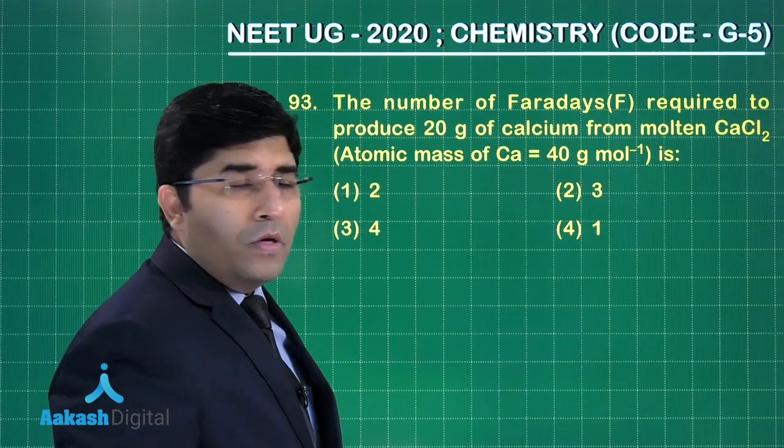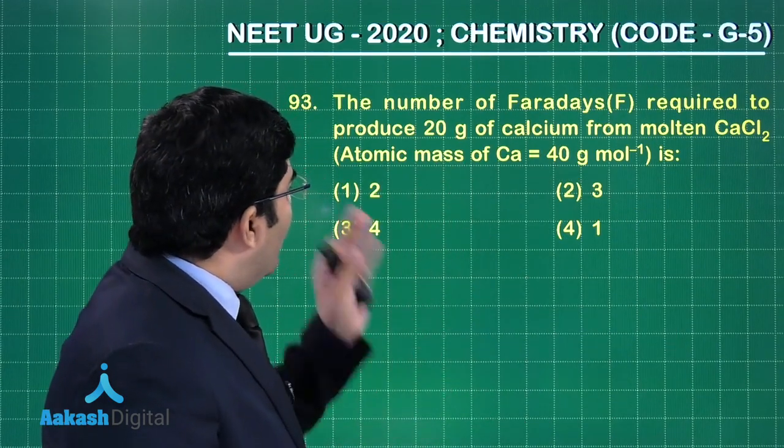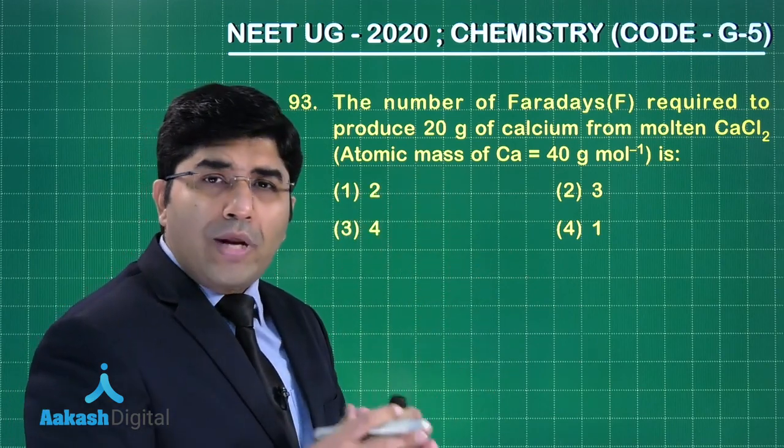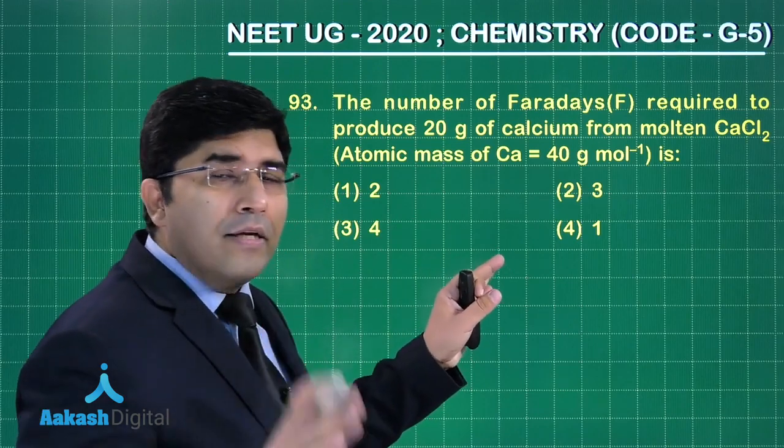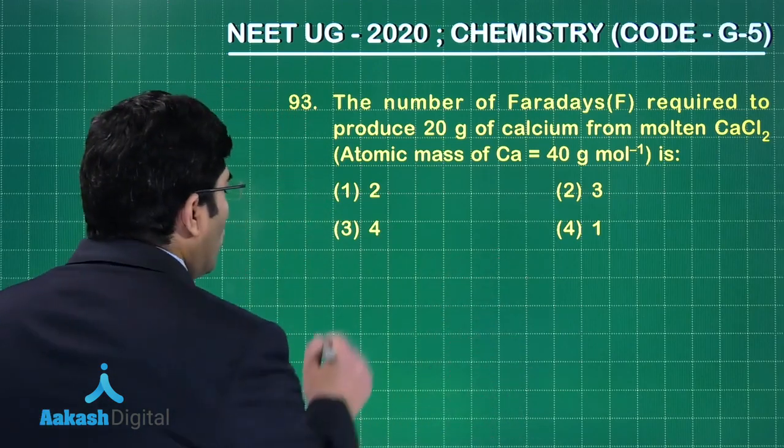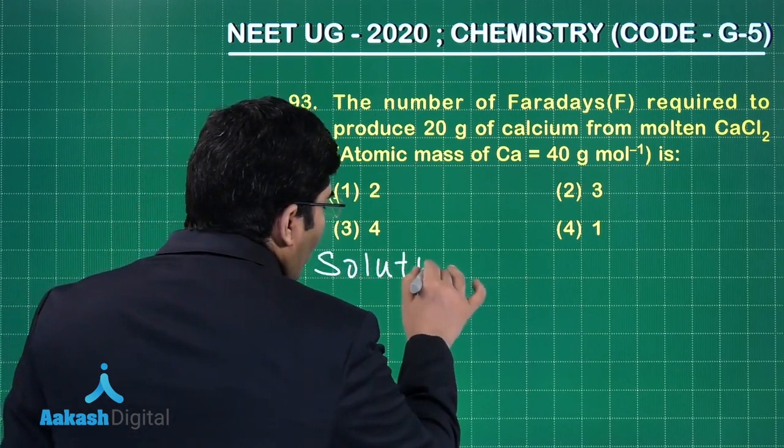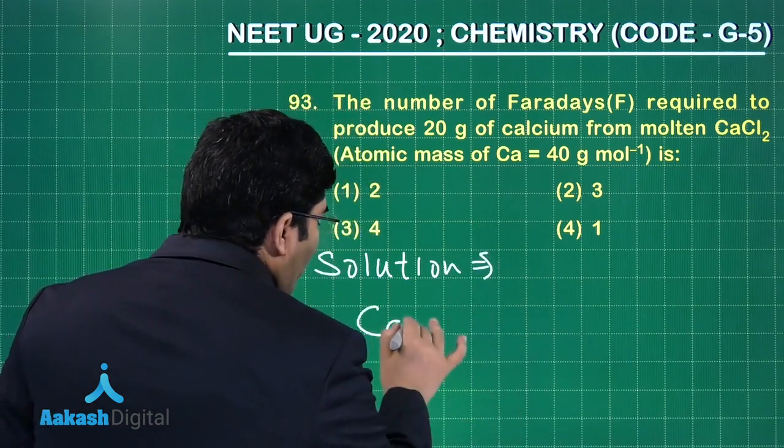Question 93 is asking: the number of Faradays required to produce 20 grams of calcium from molten calcium chloride? Four options are given and we have to find the correct answer. Let's move on to the solution.